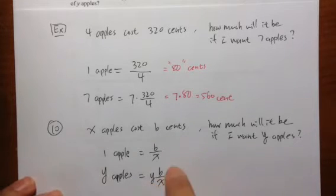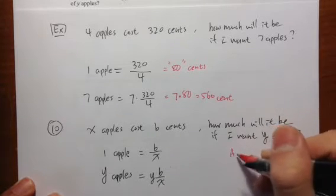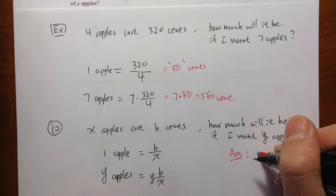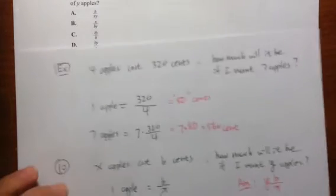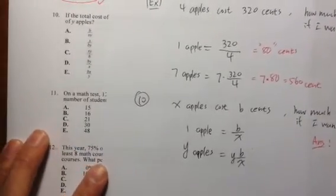Y times B over X will be the cost of Y apples. So the answer to this is Y times B over X. But let me take a look at the answer choices.